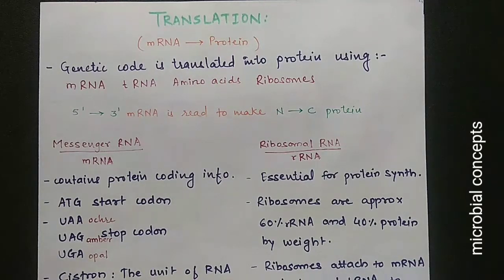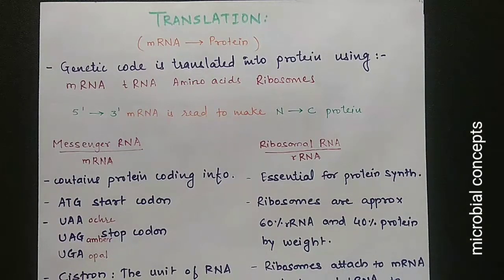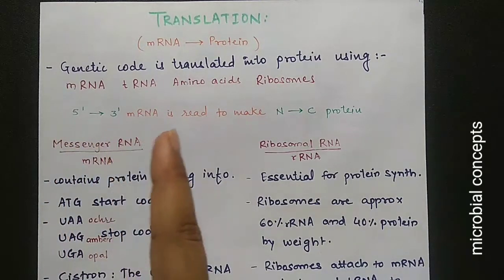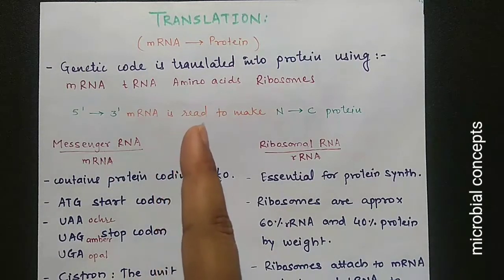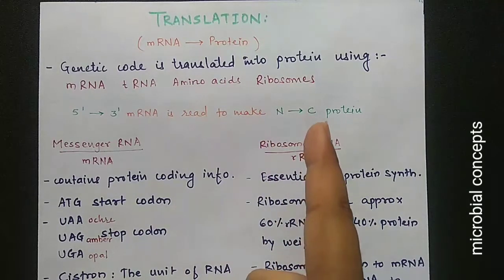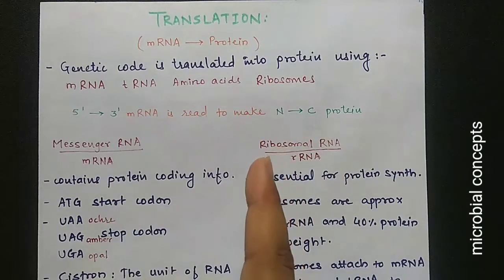Translation is the step where mRNA is used to synthesize proteins. The genetic code present on mRNA is translated into a protein using mRNA, tRNA, amino acids, and ribosomes. The direction is 5 prime to 3 prime for mRNA, and it is read to make proteins from N-terminal to C-terminal.